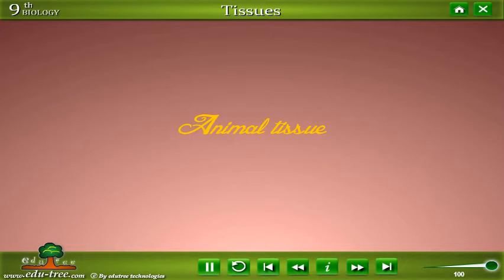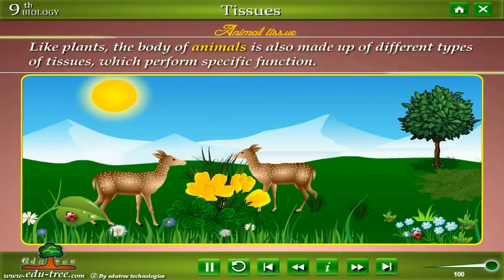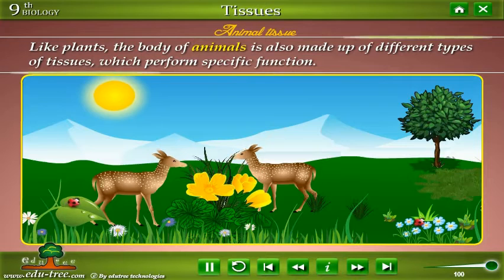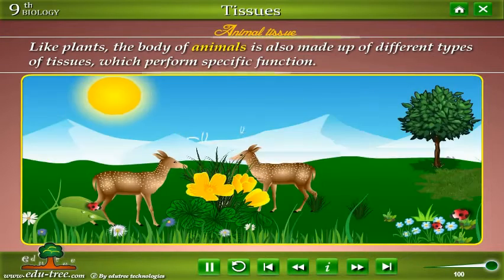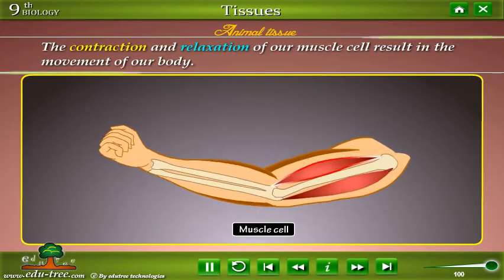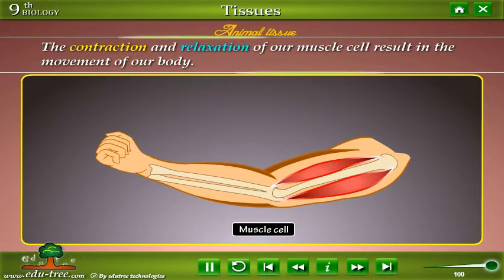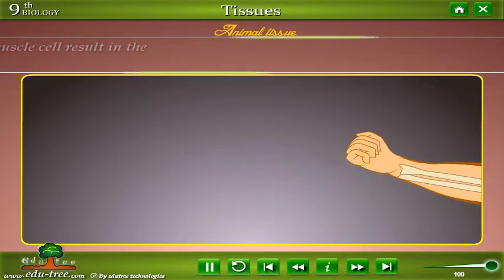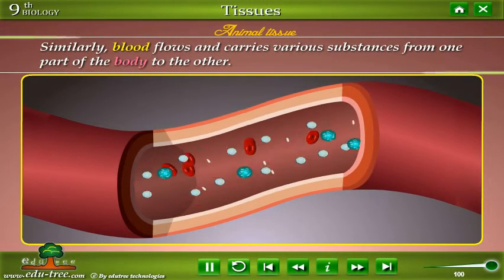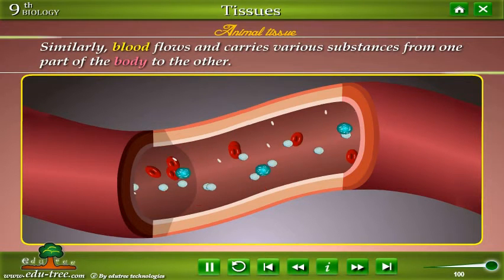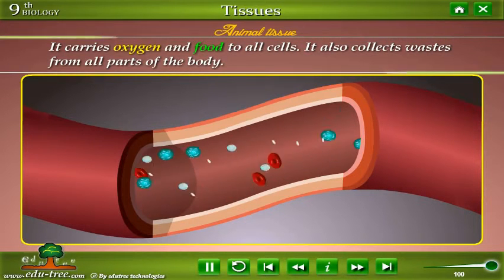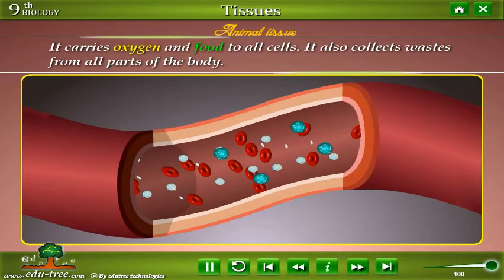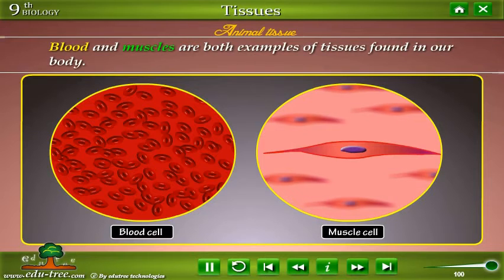Like plants, the body of animals is also made up of different types of tissues which perform specific functions. For example, the contraction and relaxation of muscle cells result in the movement of our body. Similarly, blood flows and carries various substances from one part of the body to the other — it carries oxygen and food to all cells and also collects wastes from all parts of the body. Blood and muscles are both examples of tissues found in our body.